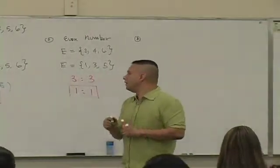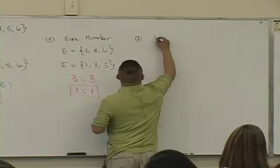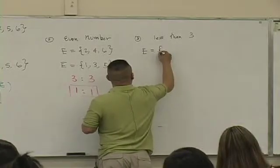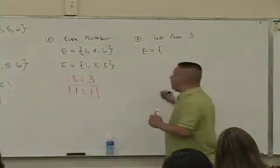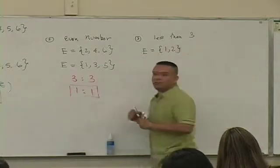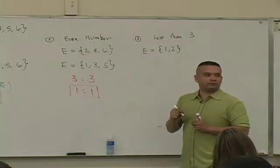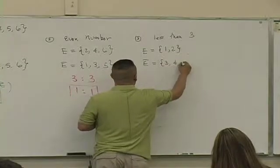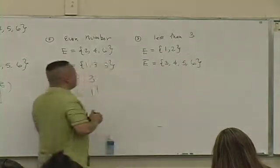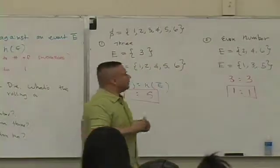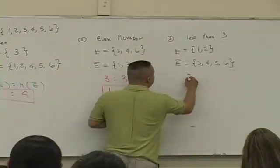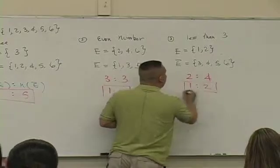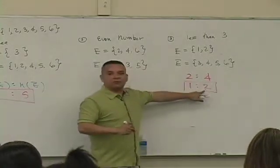Number three. What does three say? Less than three. Which outcomes are less than three? One and two. Is that true? Now, what's the complement of E? Three, four, five, and six. Apply the definition of odds for. Two to what? To four. Can you reduce this? It's one to two. So this is odds for. There is one success for every two failures.